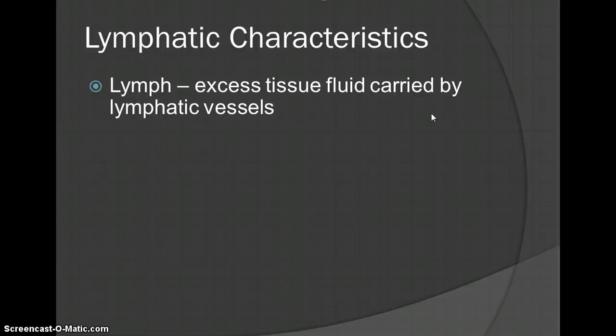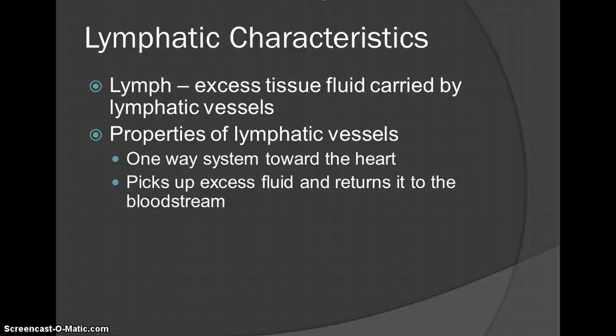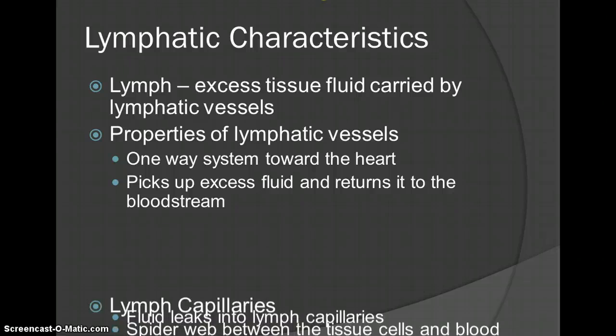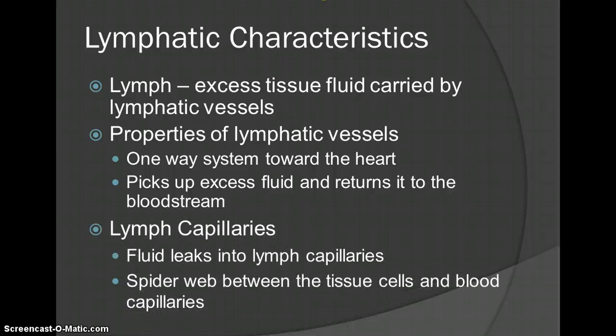Lymph is that excess tissue fluid that's carried by all of these lymphatic vessels. The vessels are a one-way system towards the heart — it picks up any fluids and returns them to the bloodstream. It doesn't go from the blood to lymph; it always goes from all this extra stuff into the bloodstream and up to your heart. There are also capillaries, and the fluid leaks into these lymph capillaries, which form a spiderweb between the tissue cells and the blood capillaries.